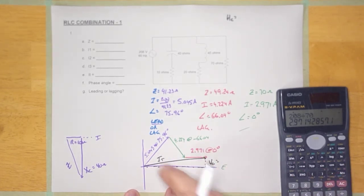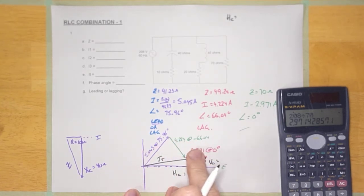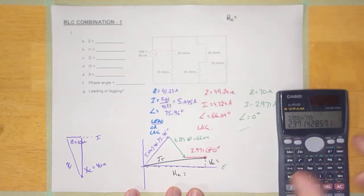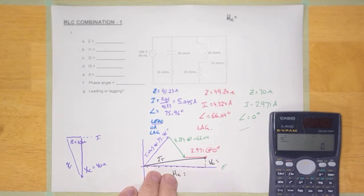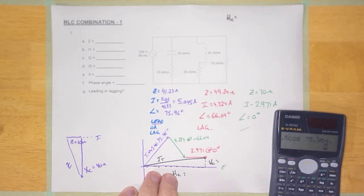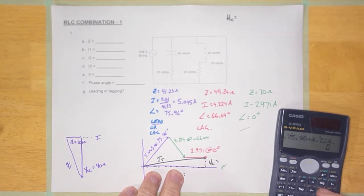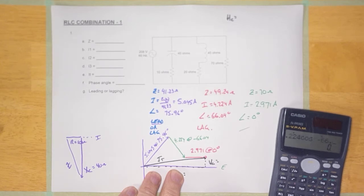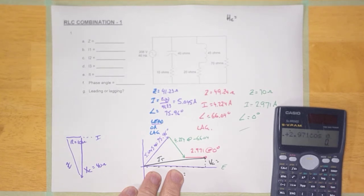And the same with the vertical component — it is phasor 1 sine its angle, plus phasor 2 sine its angle, plus phasor 3 sine its angle. I'm going to calculate it all at once: phasor 1 is 5.045 cos(75.96), plus 4.224 cos(-66.04), plus 2.971 cos(0).